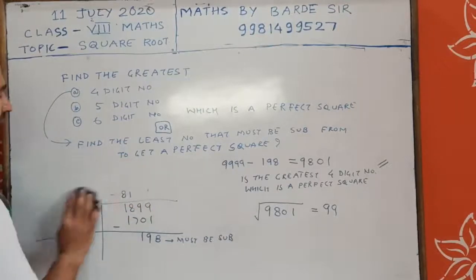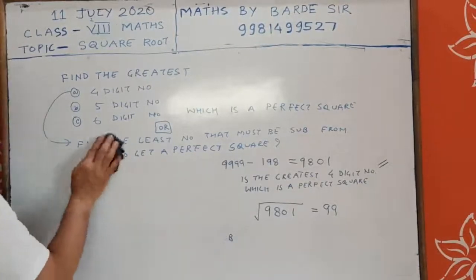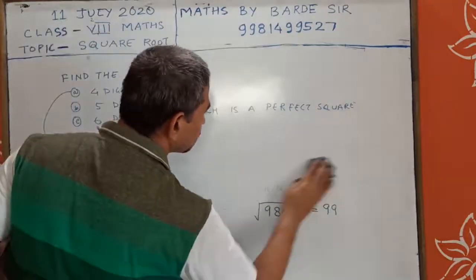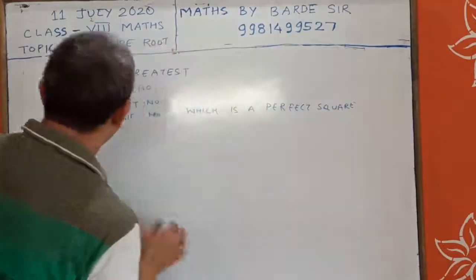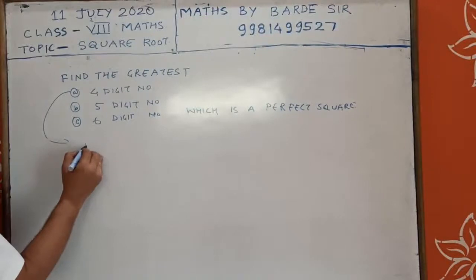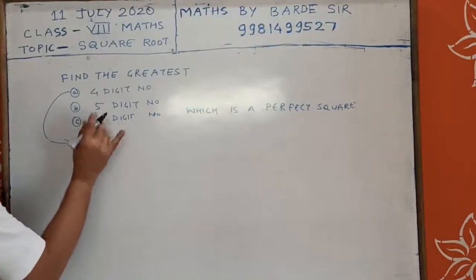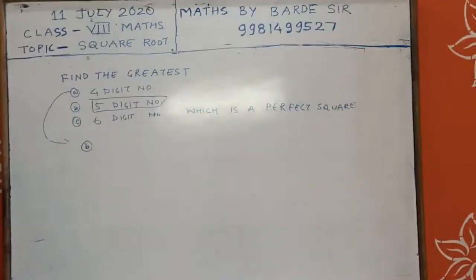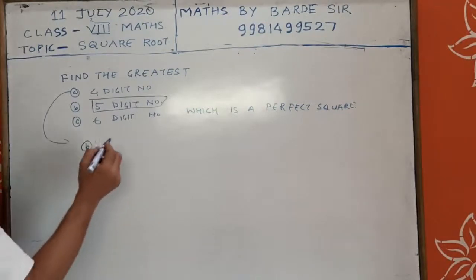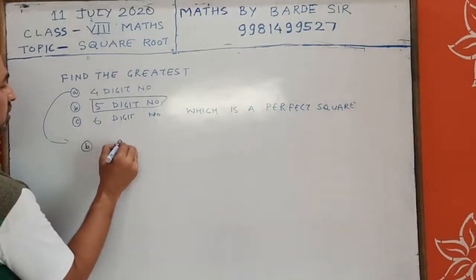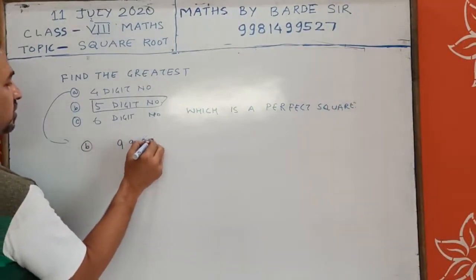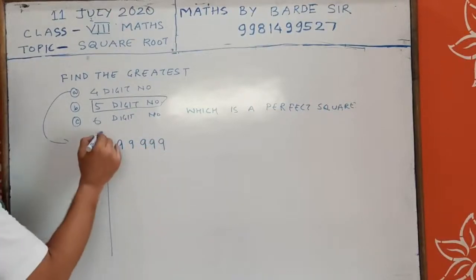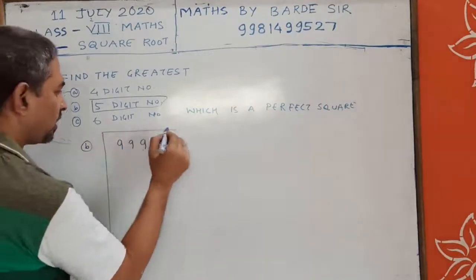Let's see Part B. For Part B, the greatest five-digit number is 99,999. We apply the long division method.